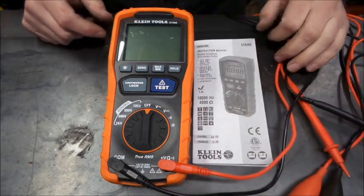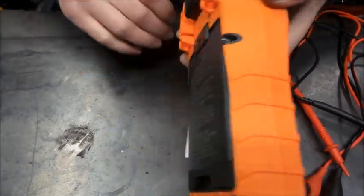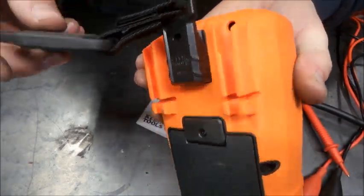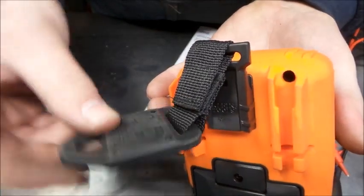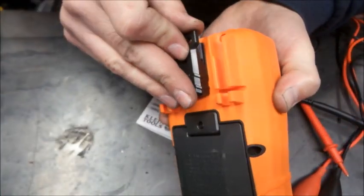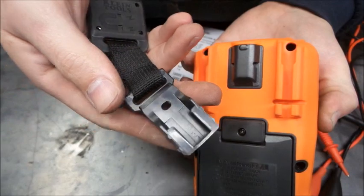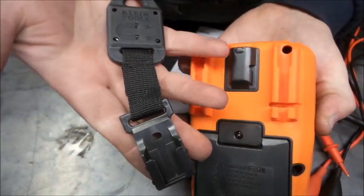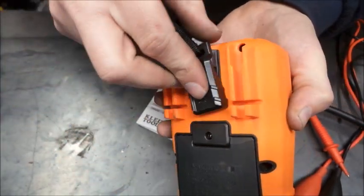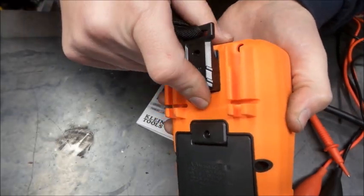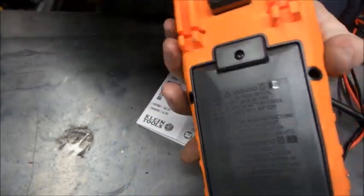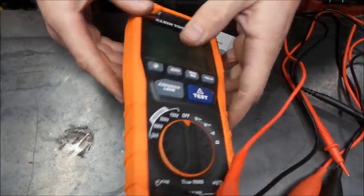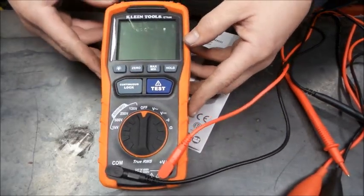I did opt for the additional magnetic clip. I think this comes off, yeah there you go, it's just a clip on. It's a setup that Klein has on a bunch of their meters. I really like that option. Slides on easy, holds well, holds very well.